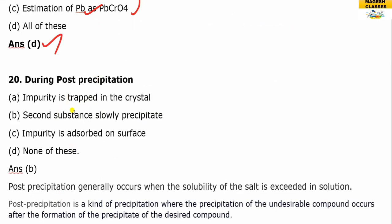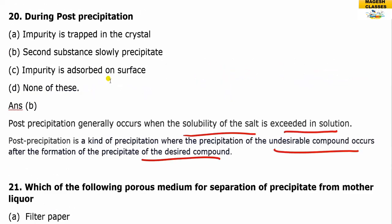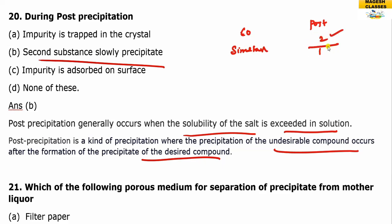Forced precipitation occurs when the solubility of a salt is exceeded in solution, and desirable compounds also precipitate. In co-precipitation, simultaneous precipitation occurs — the first substance precipitates, and then a second substance slowly co-precipitates along with it.